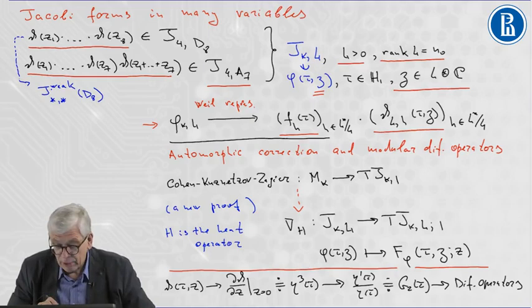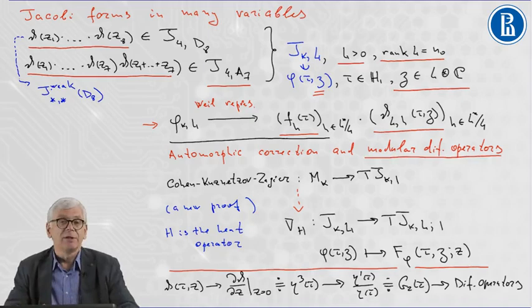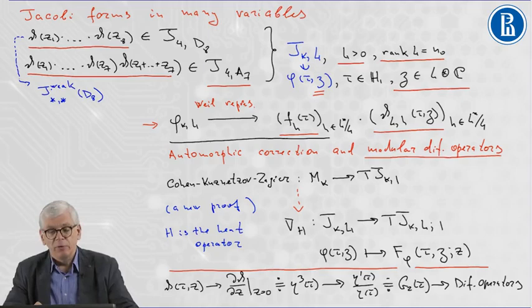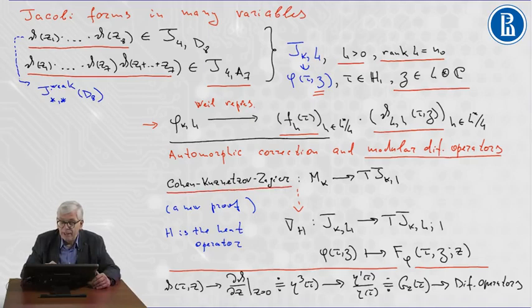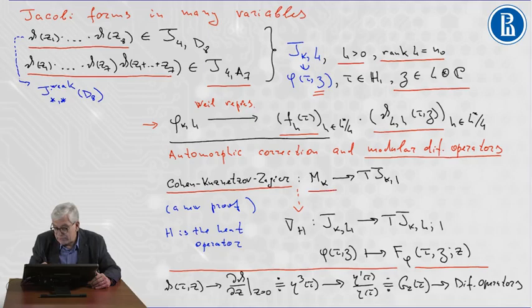The subject of automorphic correction is very much related to the theory of modular differential operators. We construct modular differential operators for usual modular forms and for Jacobi forms in many variables. In this way, we give a new proof of the Cohen-Kuznetsov-Zagier theorem about the existence of a differential operator which transforms the space of modular forms of weight k into the space of Jacobi-type forms of weight k and index 1.